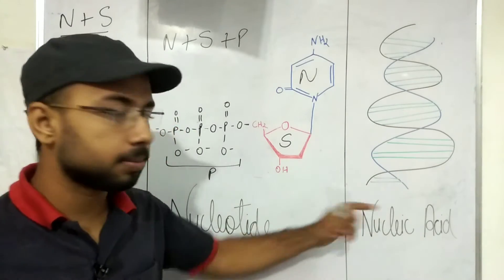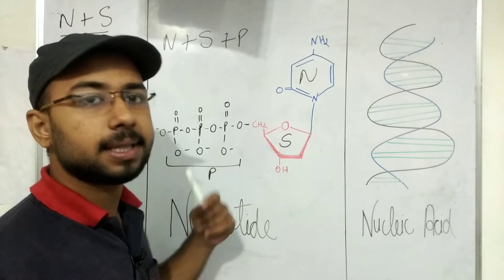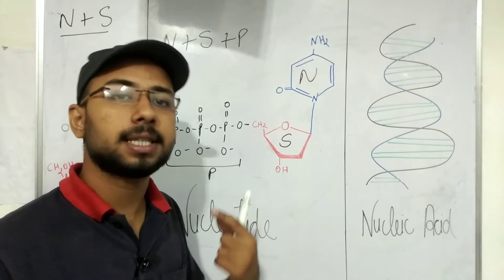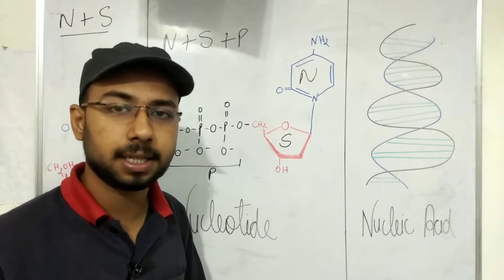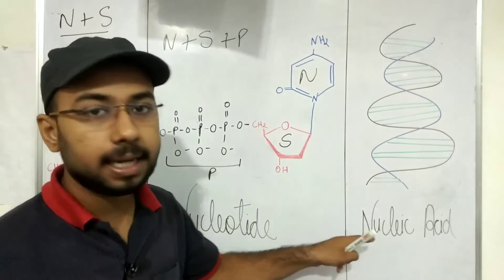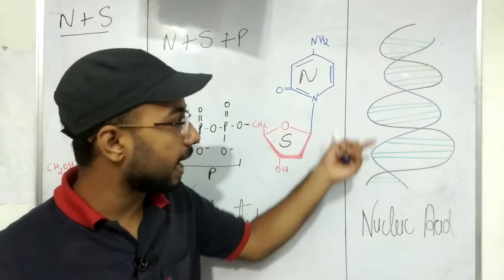It is the polymeric form of nucleotide, means that when these nucleotides form a chain, a large chain, a huge chain, then it forms a nucleic acid. It may be in the single stranded form, which is generally we know that RNA is present in the single stranded form, while it is in the double stranded helical form.